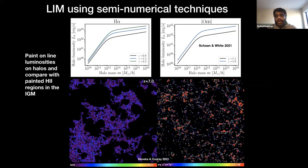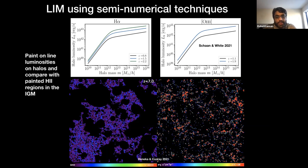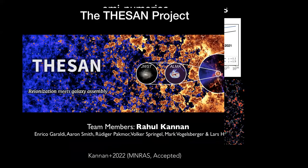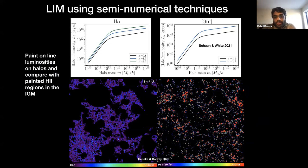Many people have tried doing this using semi-numerical techniques. What people usually do — for example on the left I show 21-centimeter emission — they use semi-numerical techniques like 21cmFAST, which uses the excursion set formalism to model the ionized bubbles around galaxies. They use some analytic scaling relation between the halo mass and the H-alpha luminosity. These scaling relations are either obtained using theoretical models or observational estimates. Then they paint this emission onto the galaxies in their volume and produce line intensity maps of H-alpha on the right and 21-centimeter on the left. This has been the state of the art for quite a while now — but can we do better?